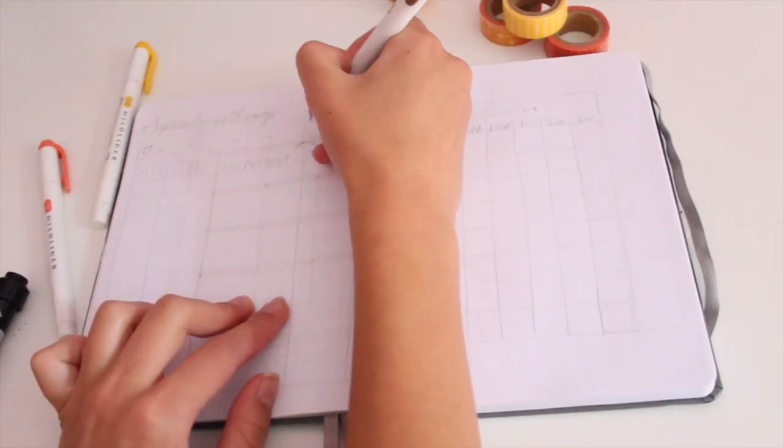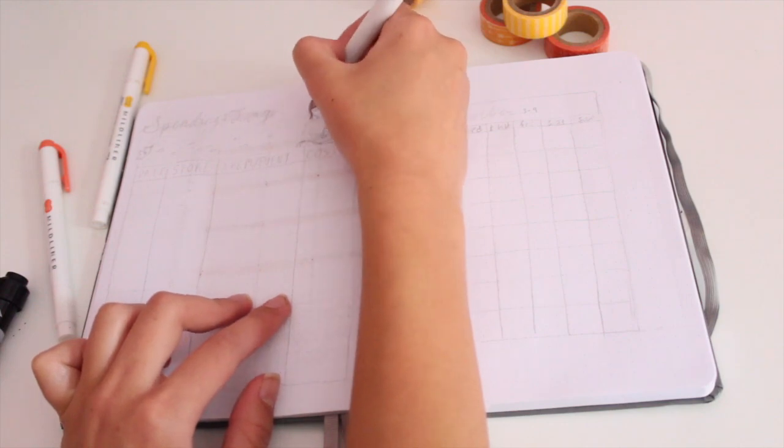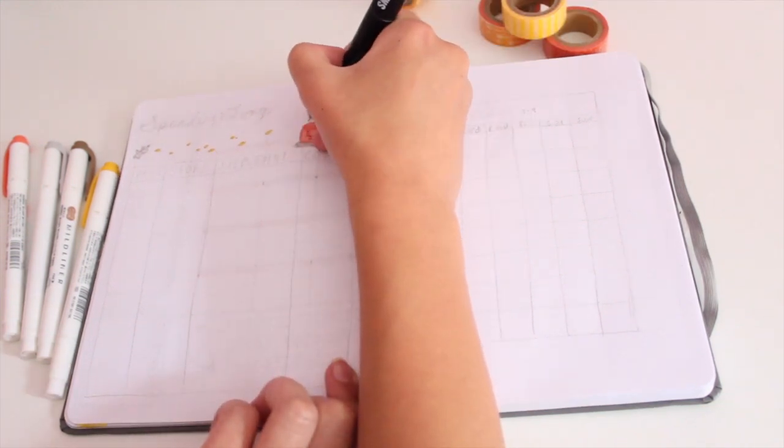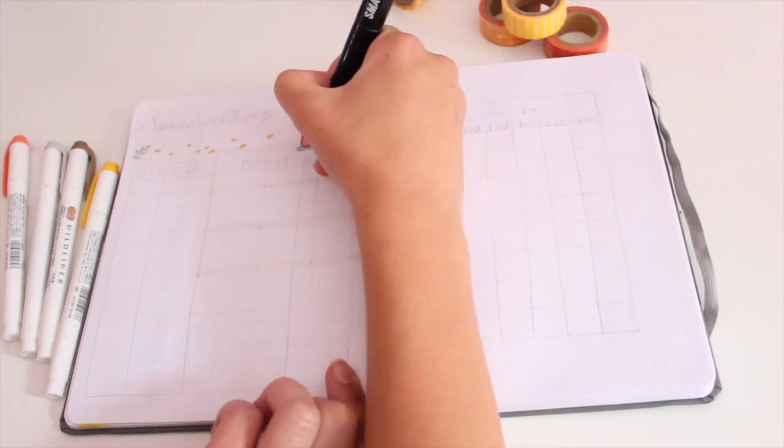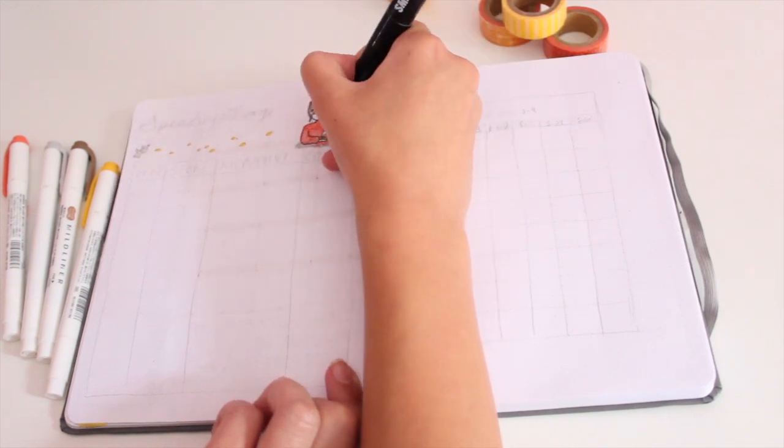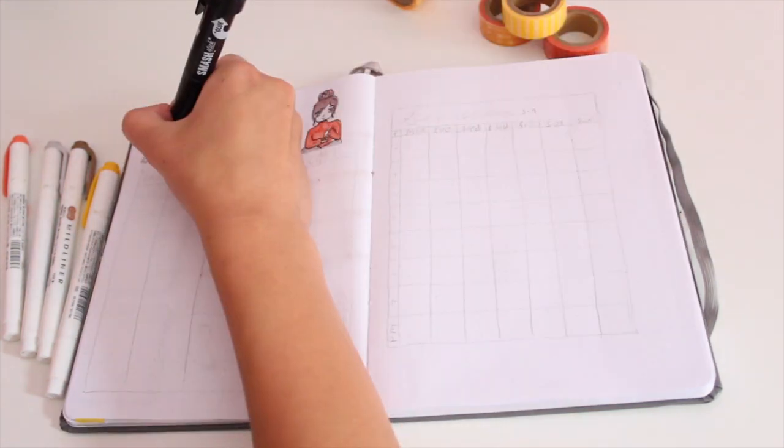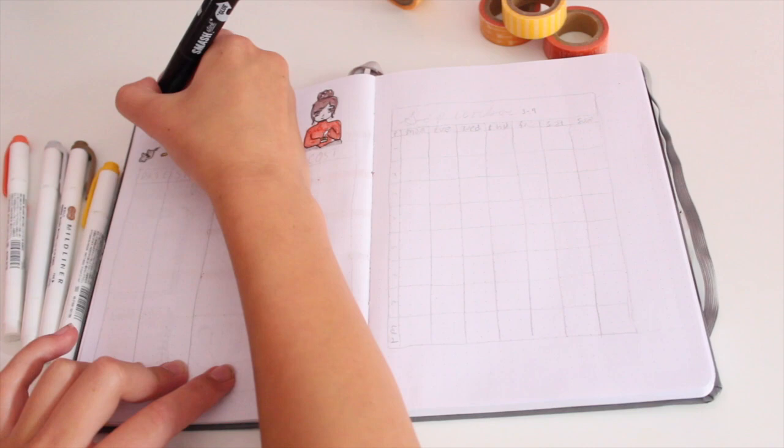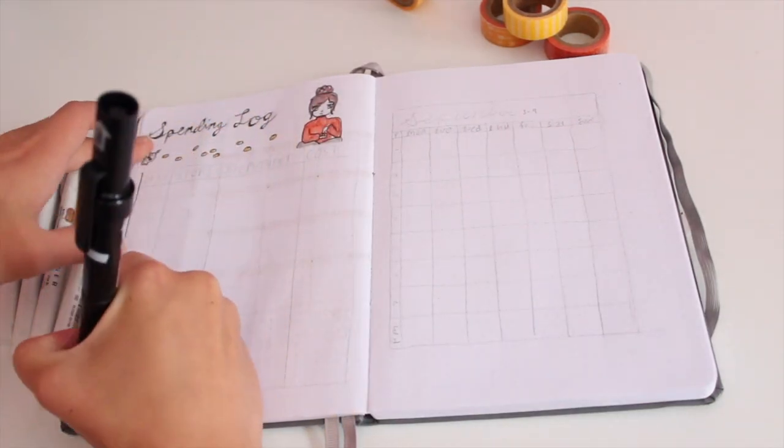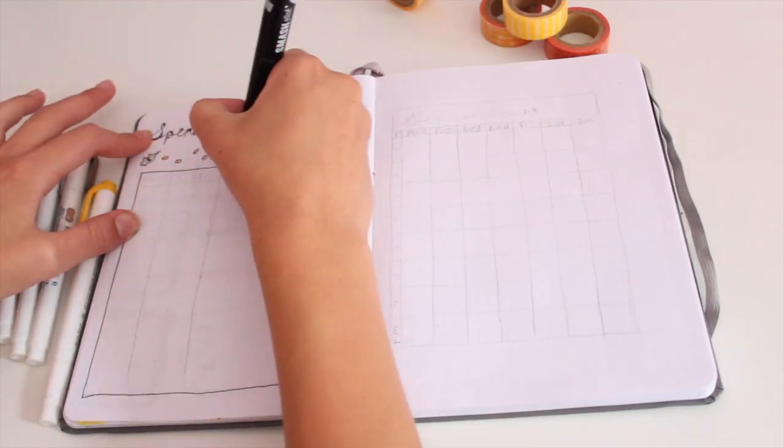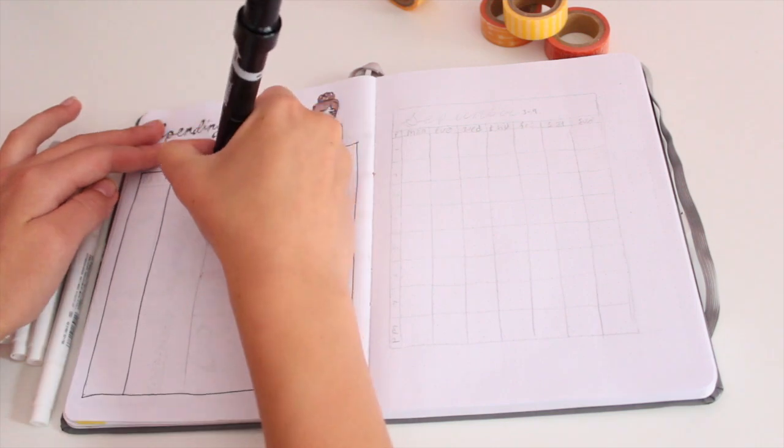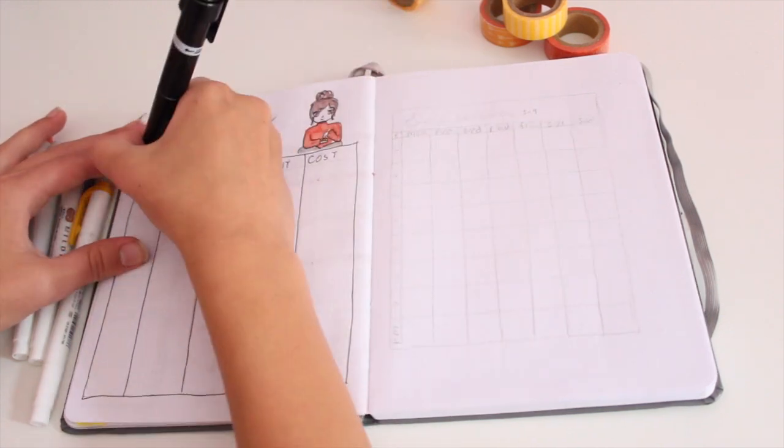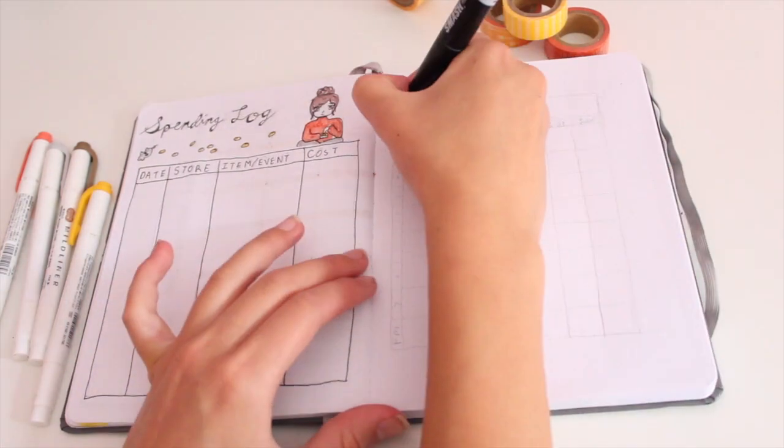This will be the last two pages that I'm going to show you guys just because I wanted to keep this short and concise. But if you guys do want to see more, just let me know. What I'm working on right now is my spending log because I like to keep track of what I spent my money on just so that I can spend less, and just so that I know what exactly most of my money is going towards. I feel like most of it goes towards food. I drew this character again, and here she's counting money from her piggy bank that's rolled over. And that's why there's little yellow dots because those are coins. I wrote spending log in cursive. Now I created a small little grid. It says date, store, item/event and cost.